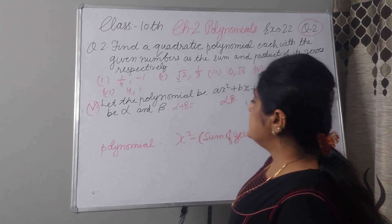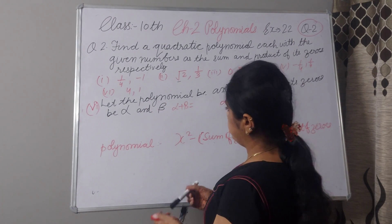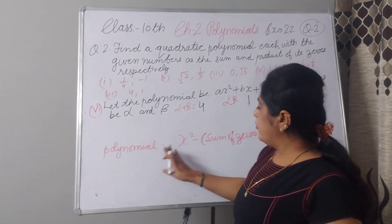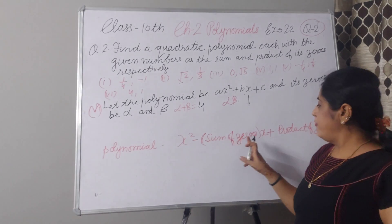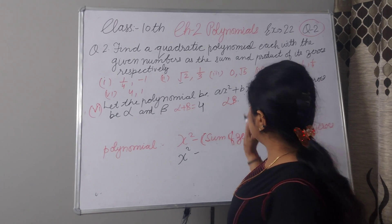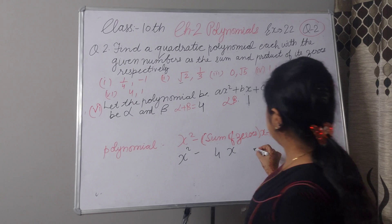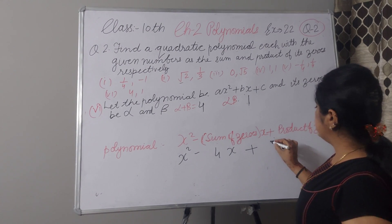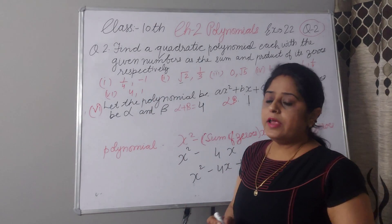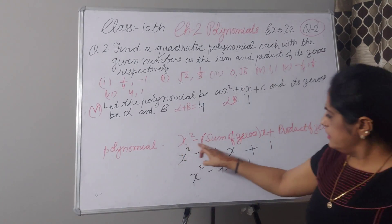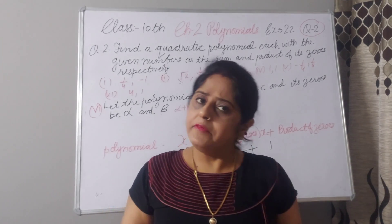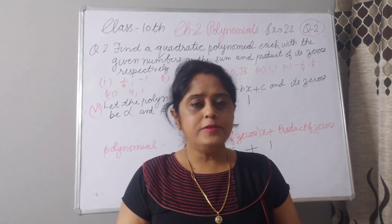Now, sixth part. The sum of zeroes is 4 and the product of zeroes is 1. Our polynomial will be x² minus (sum of zeroes) times x plus (product of zeroes): x² minus 4x plus 1. That is your polynomial whose sum of zeroes is 4 and product of zeroes is 1. Just learn this formula, practice these sums, and there is no problem — very easy. Hope you understood. Thank you.